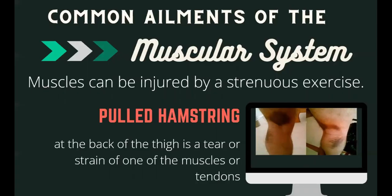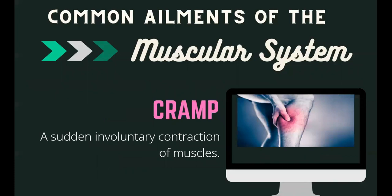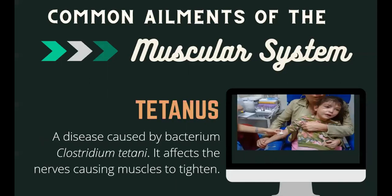Now the common ailments of the muscular system. A muscle strain, pull, or tear may be caused by overstretching — for example, a hamstring tear at the back of the thigh. A cramp is a sudden involuntary contraction of the muscles, usually accompanied by severe pain for several minutes. Tetanus is a disease caused by the bacterium Clostridium tetani, which affects the nerves and causes muscles to tighten, and may cause locked jaw. The infection enters the body through cuts or wounds.